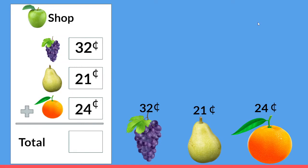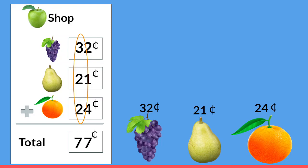Just like when we had two items that we were buying, when we buy three items we're still going to start in the ones place. We're going to add two plus one, which is three, and then three plus four is seven. After we've added the ones place we're going to look in the tens place. Here we have three plus two and that's five, and five plus two more is seven. Thirty-two plus twenty-one plus twenty-four is seventy-seven.